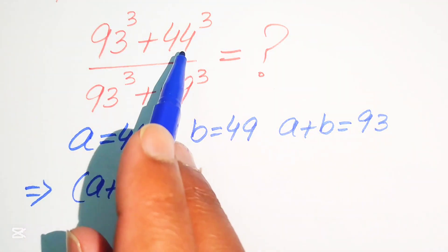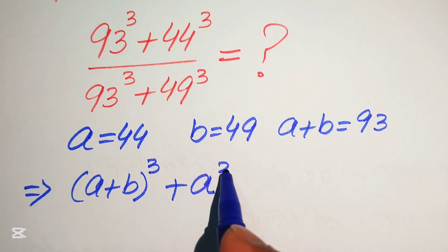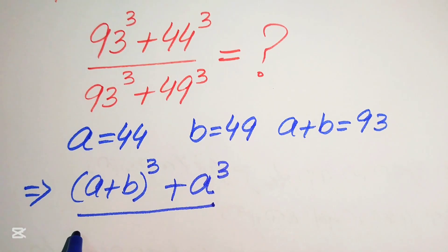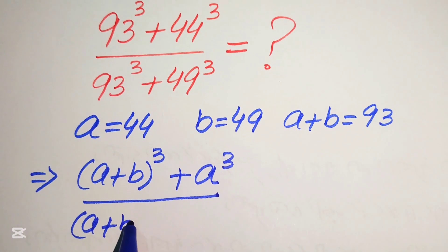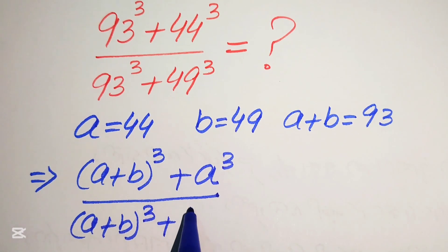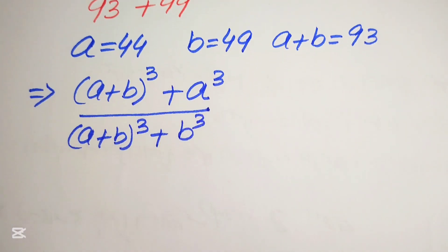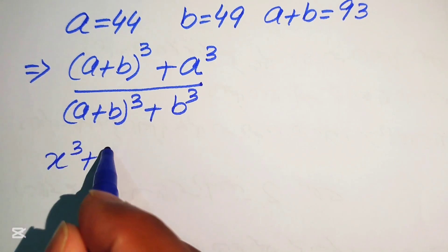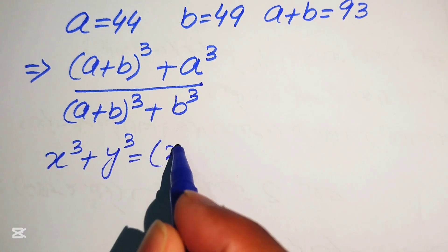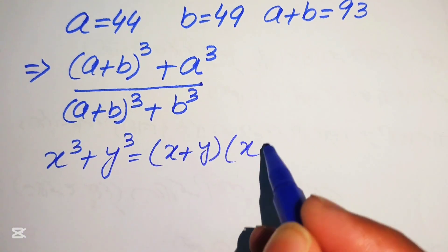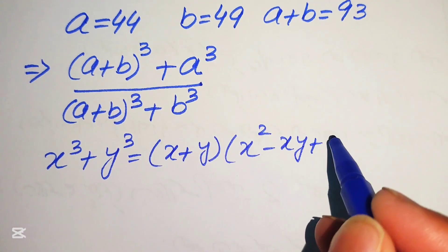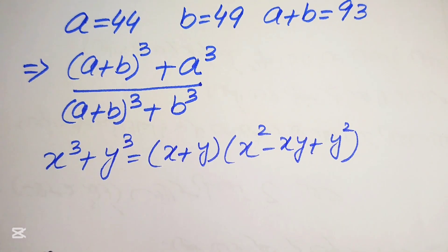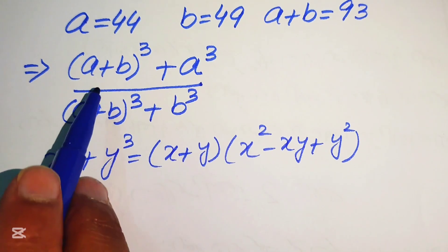Our expression is rewritten as: (a plus b) cubed plus a cubed, divided by (a plus b) cubed plus b cubed. Now we need the cubic formula: x cubed plus y cubed equals (x plus y) times (x squared minus xy plus y squared).